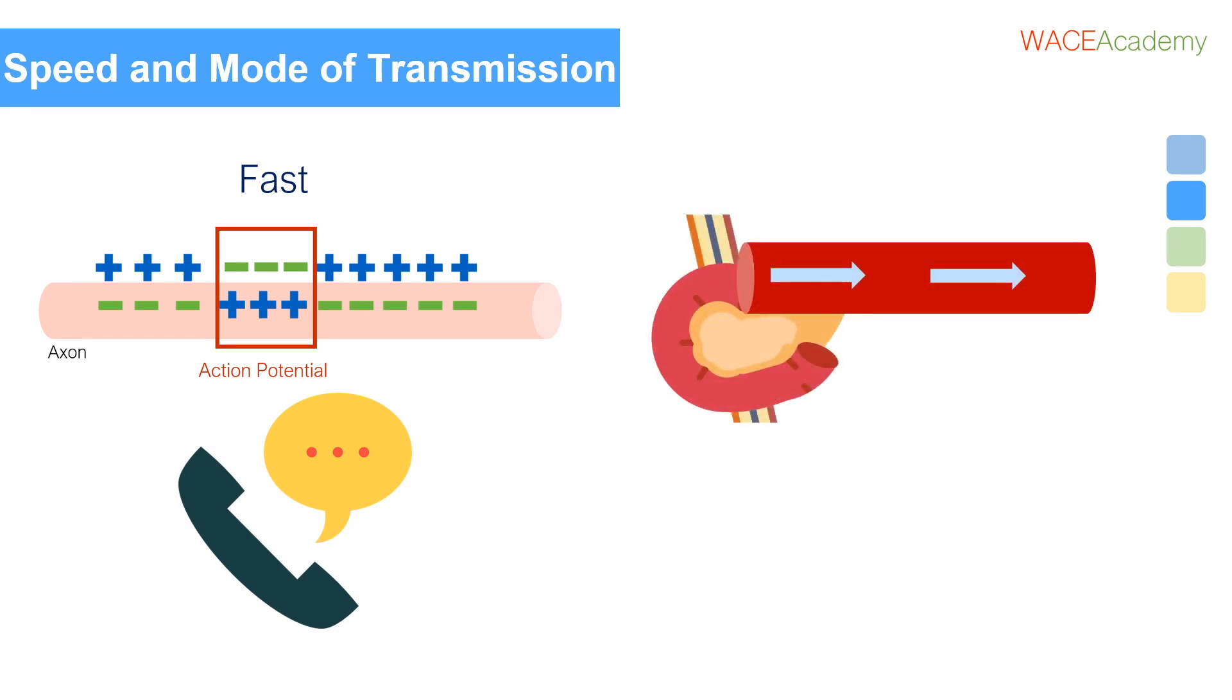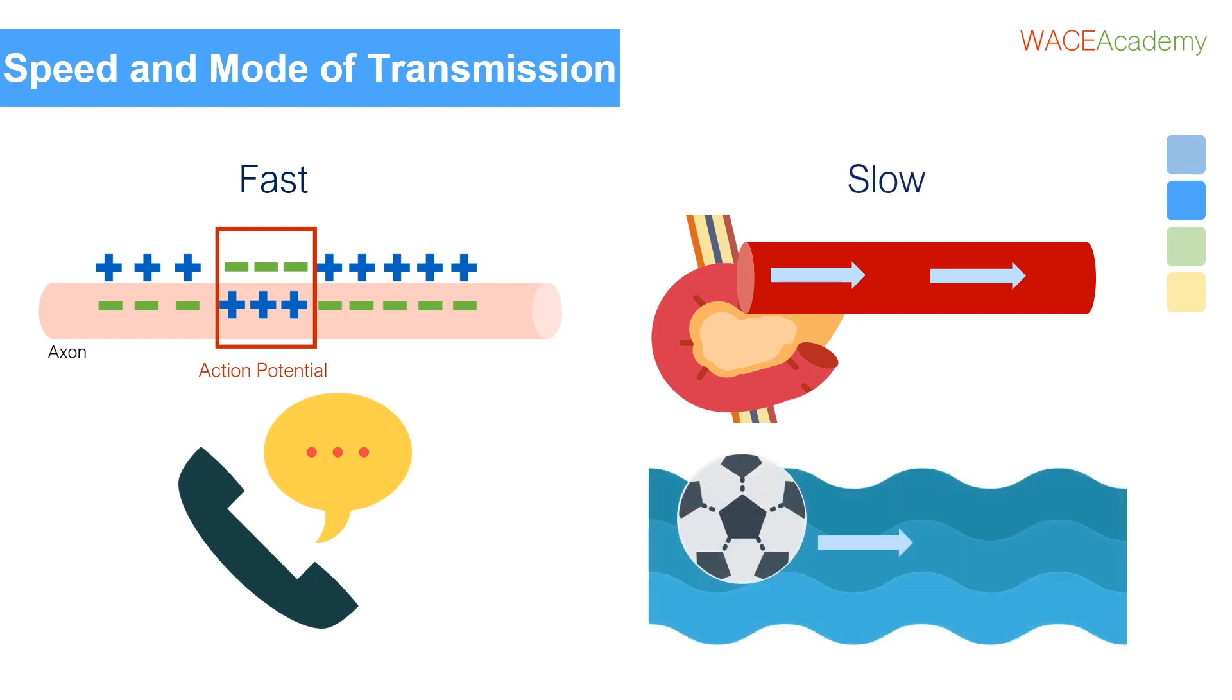The endocrine system, on the other hand, has to secrete hormones into your blood, which will then eventually reach their target as the blood circulates. This is a bit like throwing a soccer ball with some writing on it into a river and waiting for it to get to your friend a kilometre away.